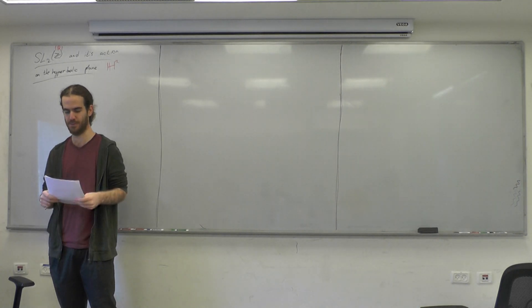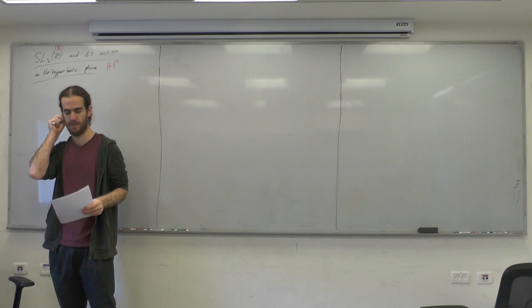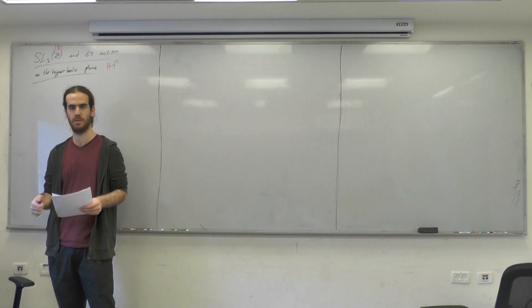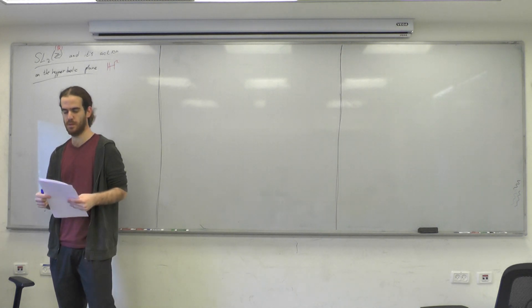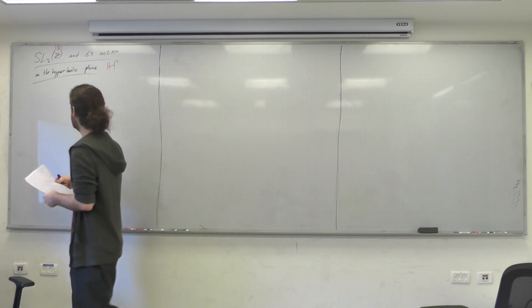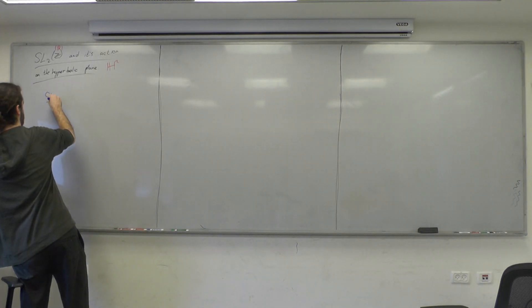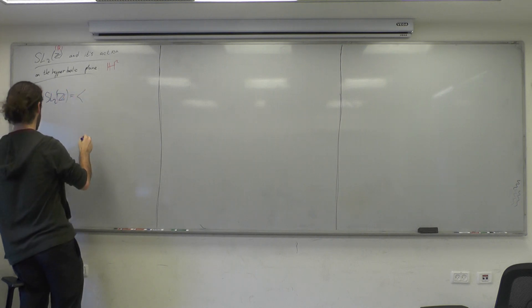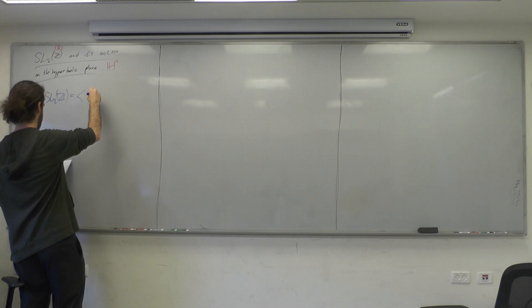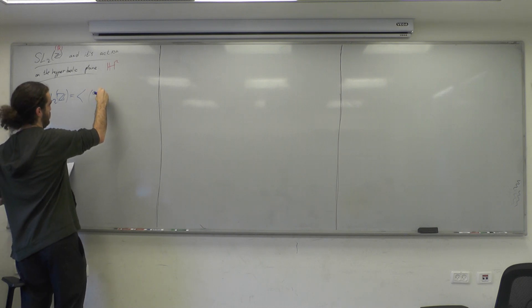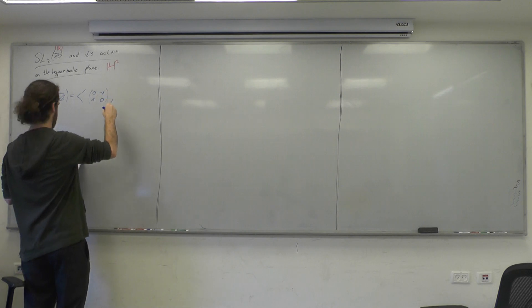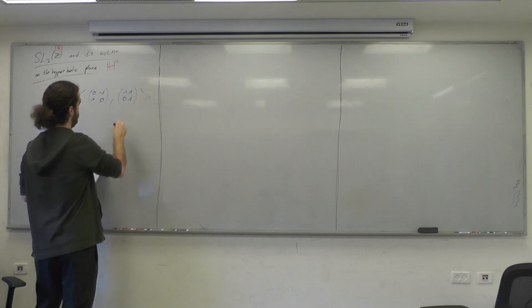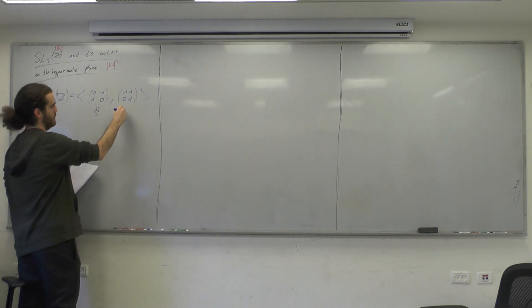During the last lecture, we talked about SL2R and then began to discuss SL2Z, and we showed it's generated by the matrices S = [[0, -1], [1, 0]] and T = [[1, 1], [0, 1]], which we denoted by S and T.